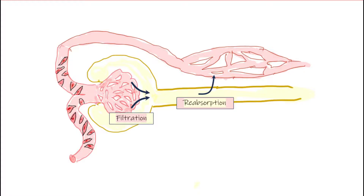None of us are going to be excreting that amount of urine. As a matter of fact, the typical urine output is approximately a liter and a half, which means that over the course of the day, we are having to reabsorb an incredibly large amount of fluid. So reabsorption is a very important process to help us maintain homeostasis.